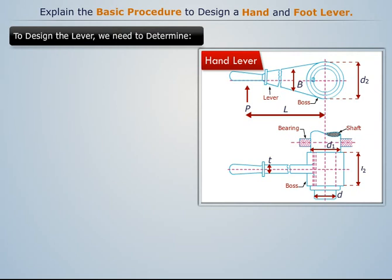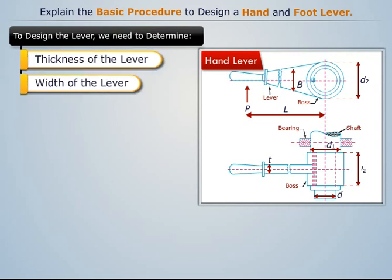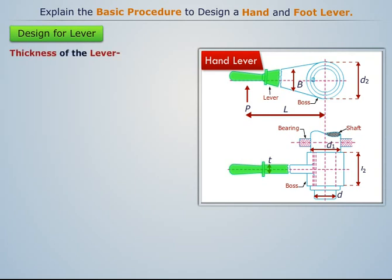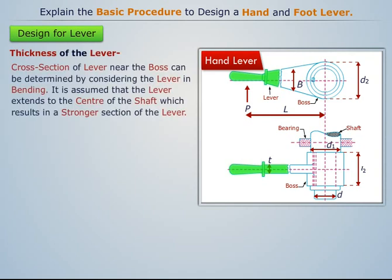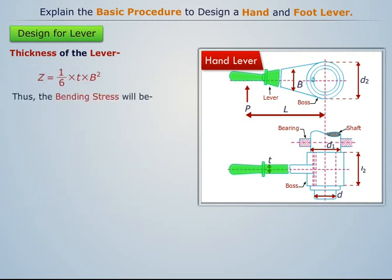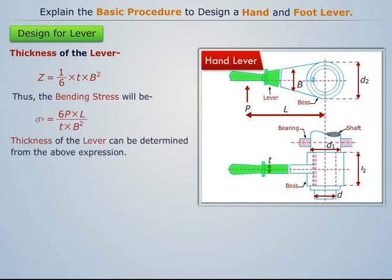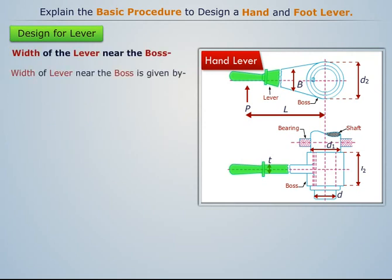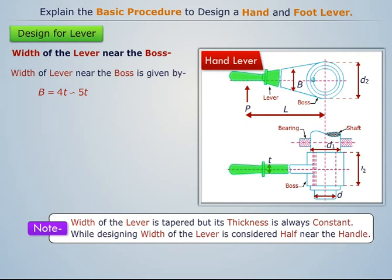Now let's design the lever. For this, we need to determine its thickness and width. The cross section of the lever near the boss can be determined by considering the lever in bending. We know that bending stress is given by a known expression. The bending moment and section modulus of the lever are given accordingly, and thus the bending stress expression is obtained. Thickness of the lever can be determined from this expression. Width of the lever near the boss is given by a related expression. Note that the width of the lever is tapered, but its thickness is always constant. While designing, the width of the lever is considered half near the handle.